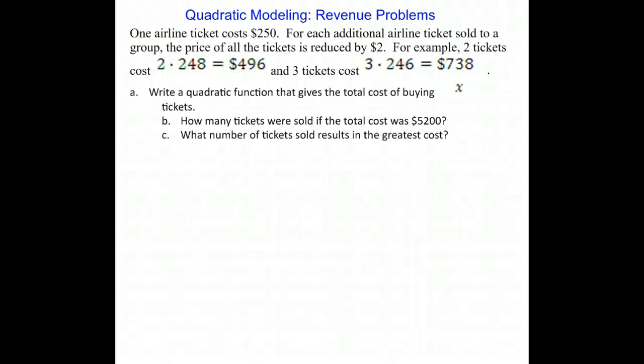Quadratic modeling: revenue problems. One airline ticket costs $250. For each additional airline ticket sold to a group, the price of all the tickets is reduced by $2. For example,